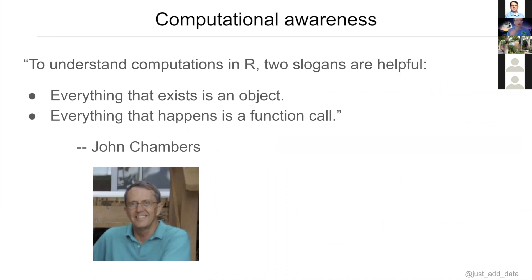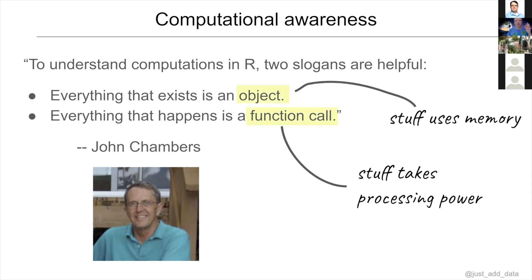If you've been around R for even a short while, you may have heard this quotation from John Chambers: 'To understand computations in R, two slogans are helpful — everything that exists is an object, and everything that happens is a function call.' Objects are things that use memory; functions are things that use processing power — both affect the performance of our code.